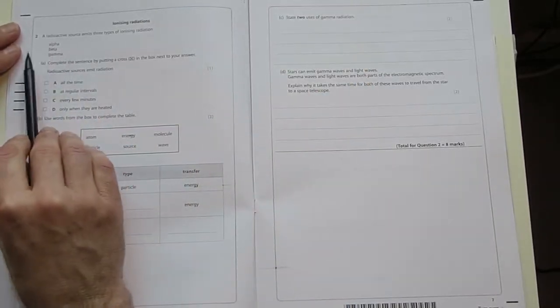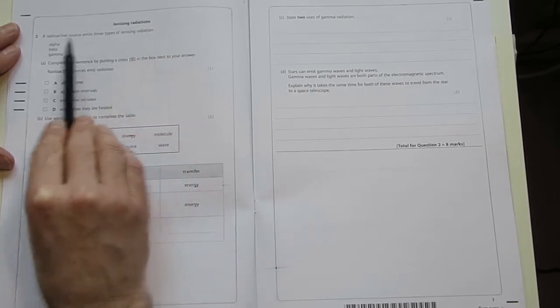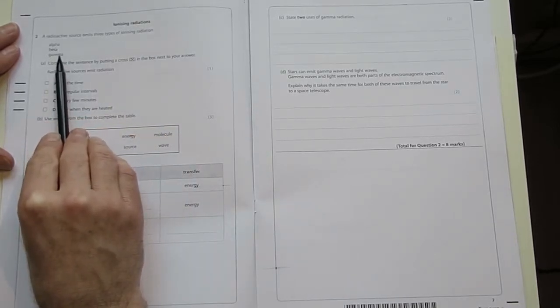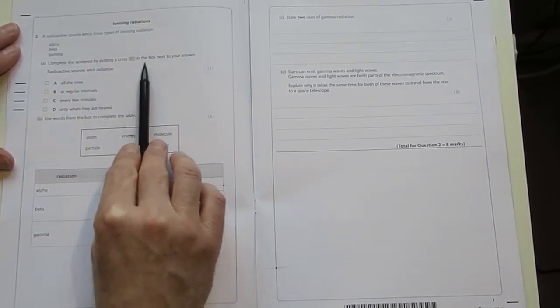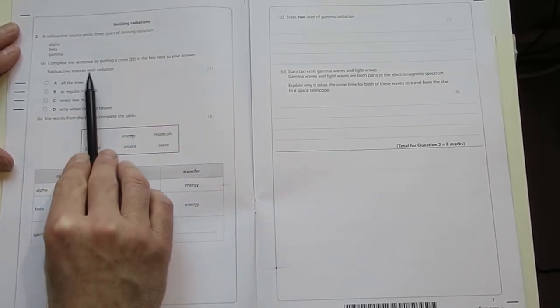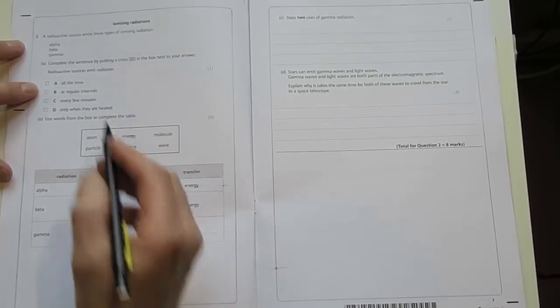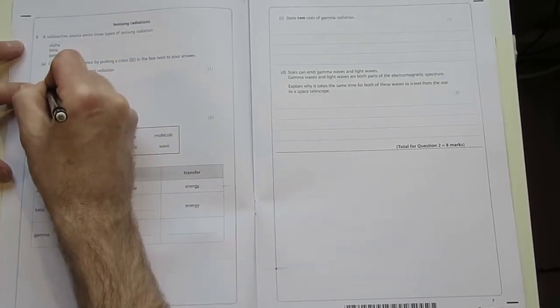The first part of the question gives you some information about the idea that a radioactive source emits three types of ionising radiation: alpha, beta and gamma. Complete the sentence by putting a cross in the box next to your answer. Radioactive sources emit radiation. And the answer that's most applicable here is all the time. So we're going to put a cross in that box.